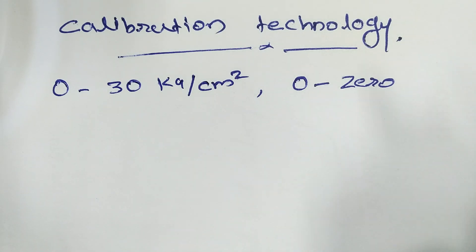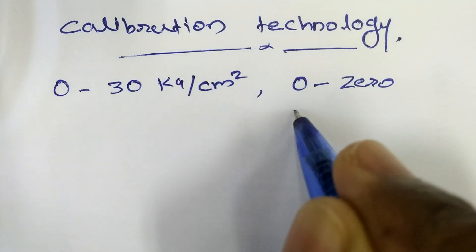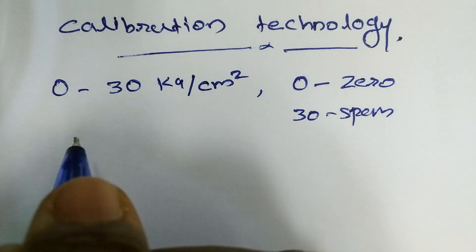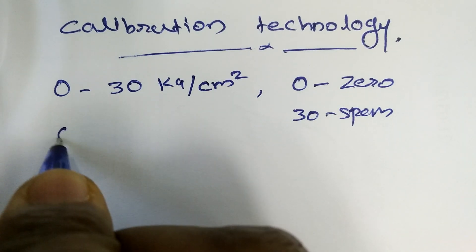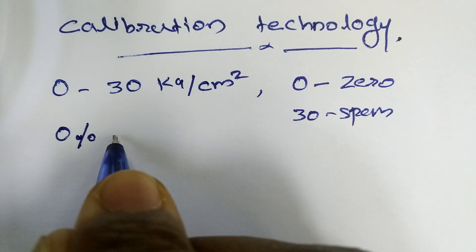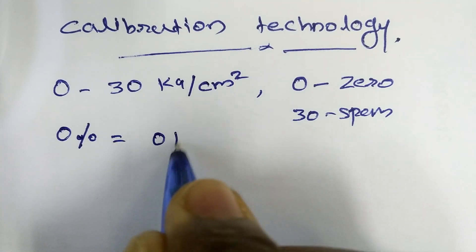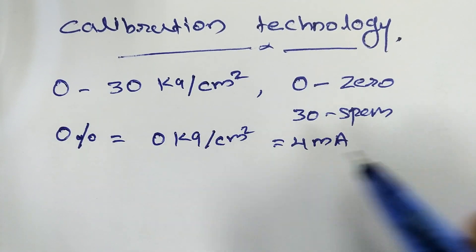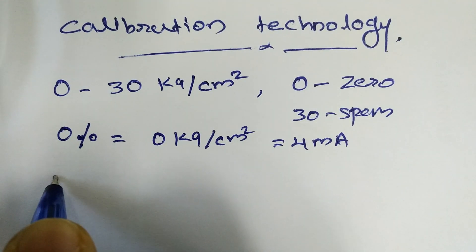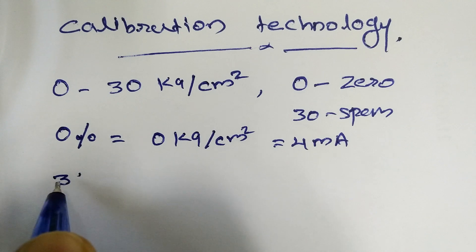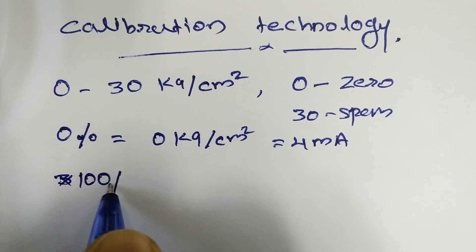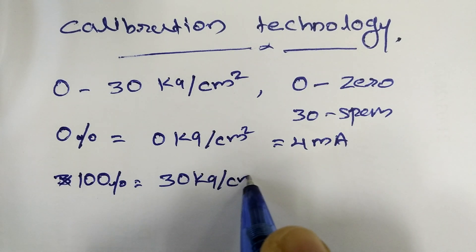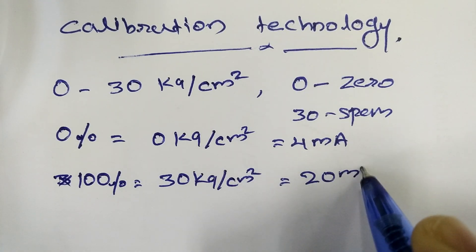Now, the range of this transmitter: 0% is equal to 0 kg per centimeter square, which is equal to 4 mA. And 100% is equal to 30 kg/cm² which is equal to 20 mA.